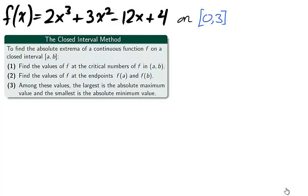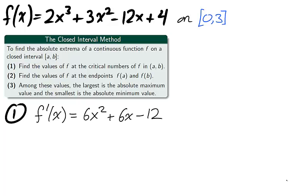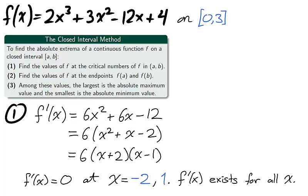The first step of the closed interval method is to find critical numbers in the interval. We take the derivative of f and factor. Remember that critical numbers are the x values for which the derivative is 0 or does not exist. Since the derivative of a polynomial is defined for all x values, the only x values of interest are negative 2 and 1. Be careful and don't jump to step 2 at this point. X values are critical numbers only if they are in the domain. As the domain of f is [0,3], x equals 1 is our only critical number.